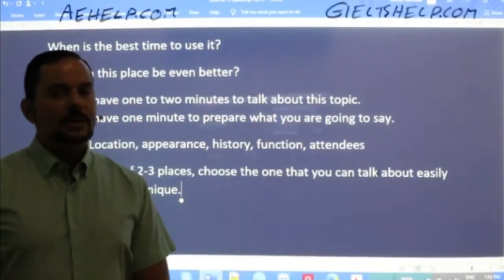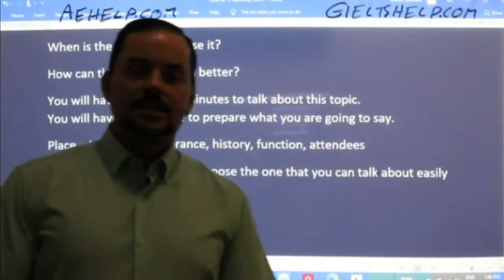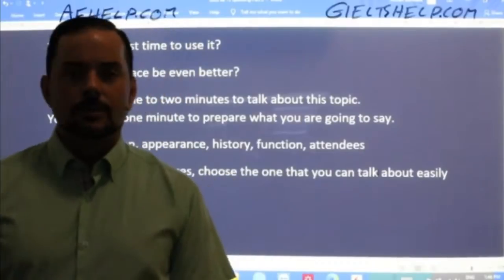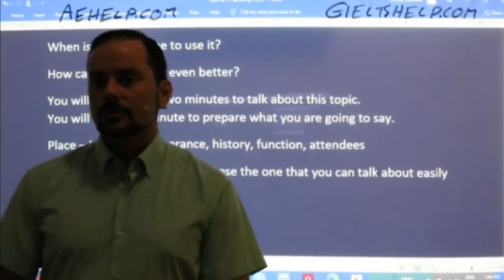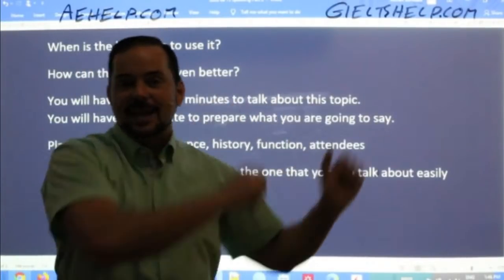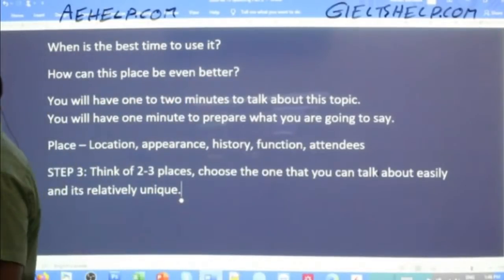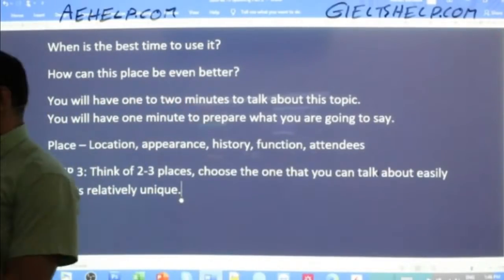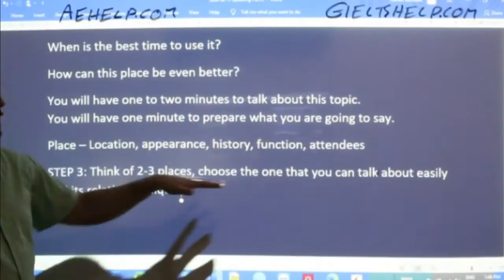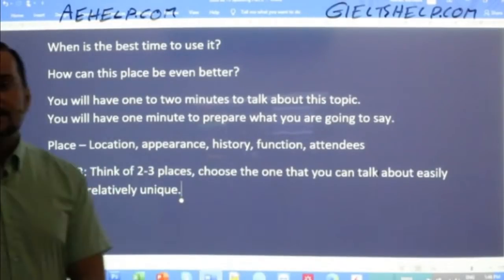If you're just copying some sentences from the internet, you're not going to do very well. Don't do that — it even says this in the British Council agent course. So step three: think of two to three places and choose one that you can talk about easily and that is relatively unique.